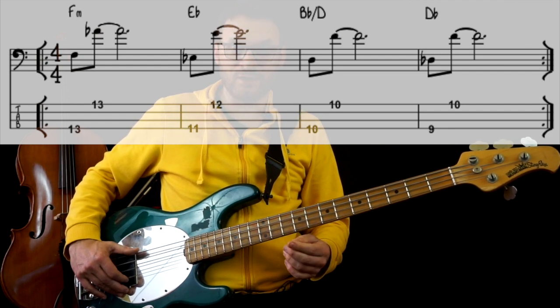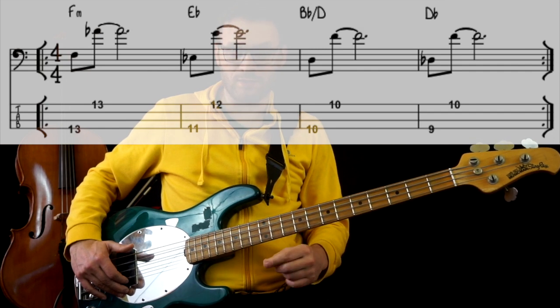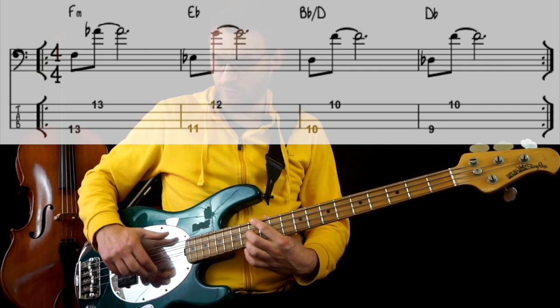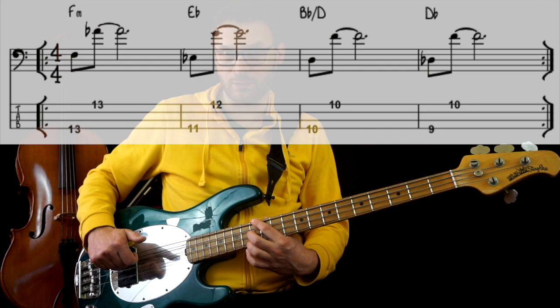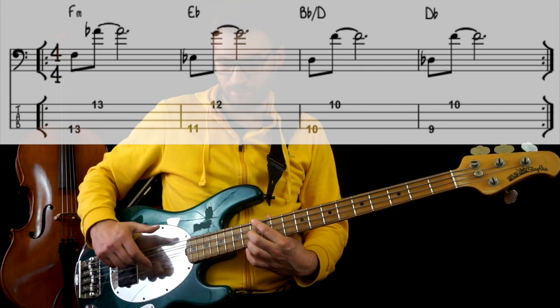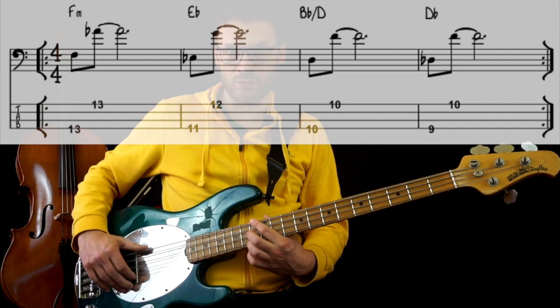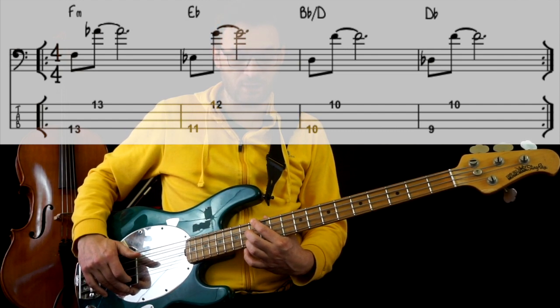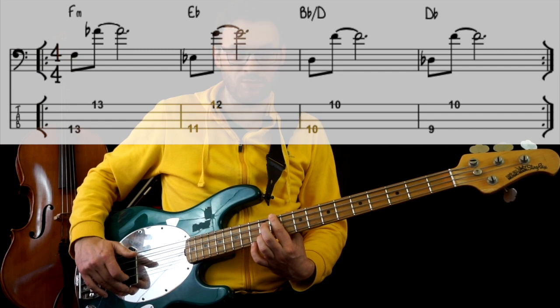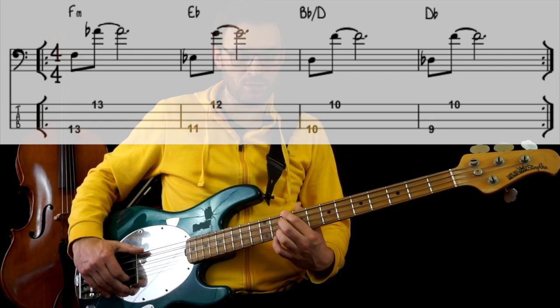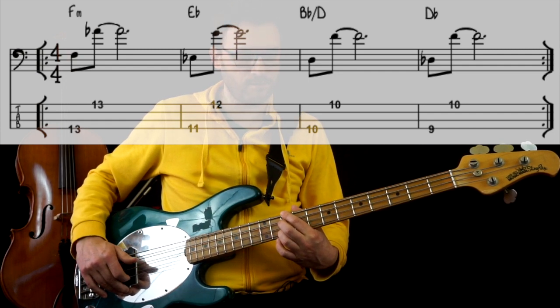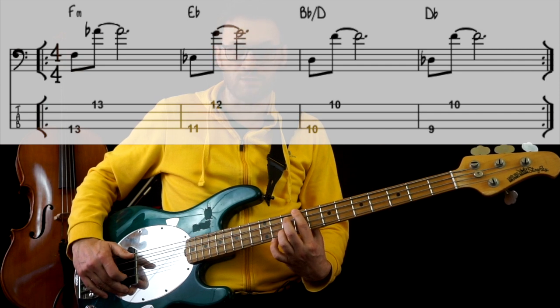In the song you hear a separation between the bass and the treble, so I play first with the thumb and then with the index pluck, letting the two sounds add together. F minor, three, four, E♭ major, B♭ bass D, D♭ major.